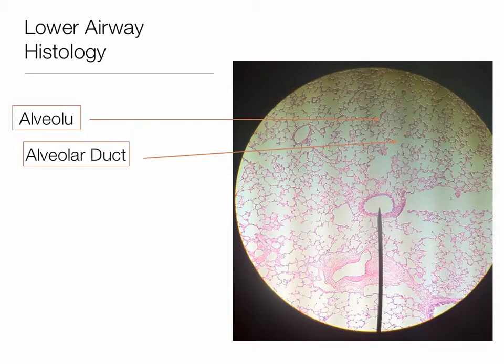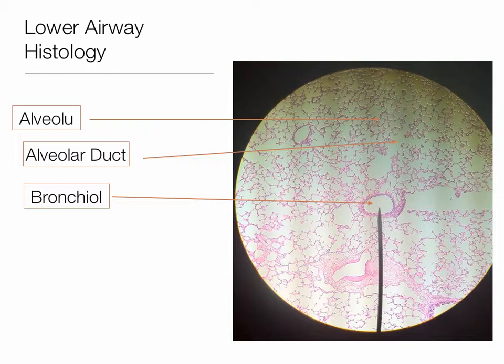I also have an alveolar duct — this is where the respiratory bronchiole kind of ends, and I have ducts with grape-like groups of alveoli branching off. Then I have a bronchiole — this is before we get to the respiratory bronchioles. If you look closely, you can see some pseudostratified columnar epithelial tissue there. Of course, we don't have that pseudostratified columnar epithelial structure in the alveoli themselves. You can really appreciate the stark contrast between the bronchiole and the alveoli.